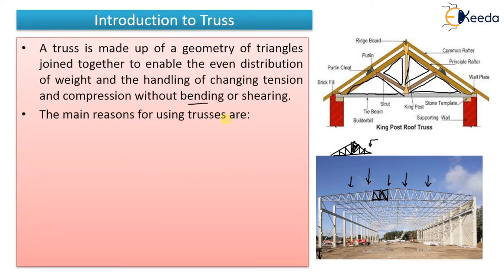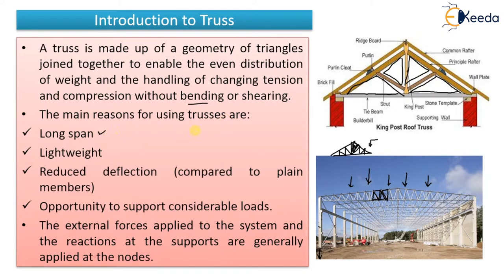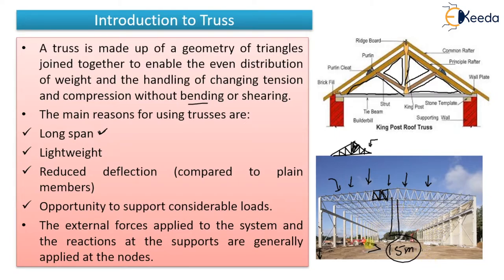The main reasons for using trusses are: first, long span. If you want a large column-free area, the span can be more than 15 meters. With conventional RCC construction it is not possible to have large spans without intermediate columns, but with trusses you can achieve a large column-free area. That's why trusses are used in industrial floors where heavy machines and big equipment require column-free areas. A second advantage is that trusses are lightweight because various standard sections are used.